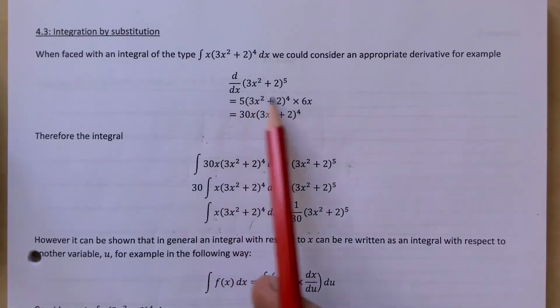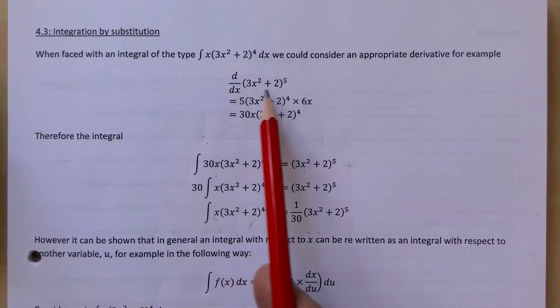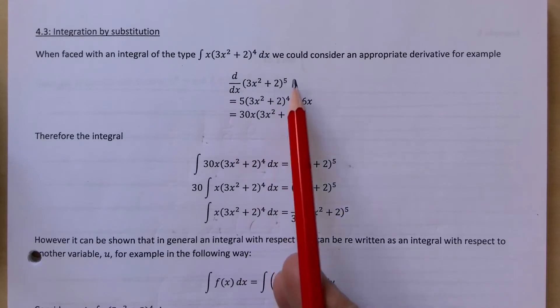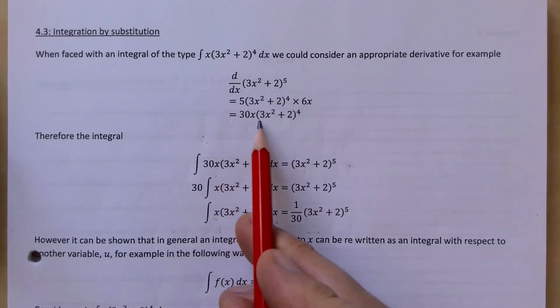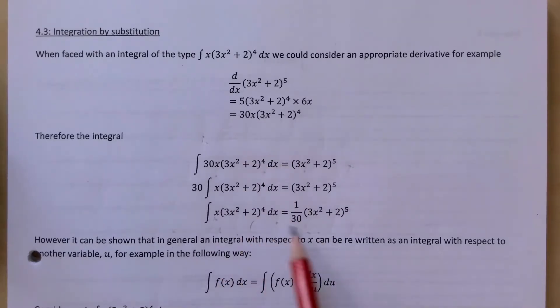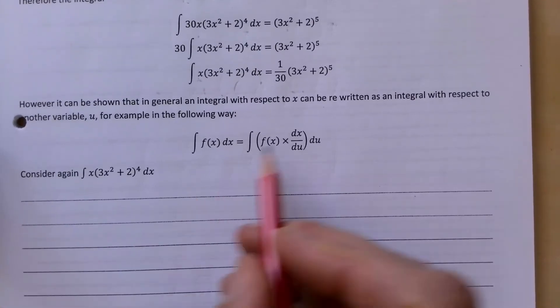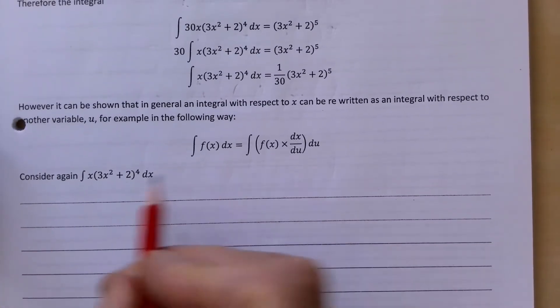If you remember the chain rule and how we worked our chain rule, we differentiate (3x² + 2)⁵ and we're left with 30x(3x² + 2)⁴. This is the format of trying to work backwards and trying to get the formula in for that way. We're just going to take you through an example here of integration by substitution.